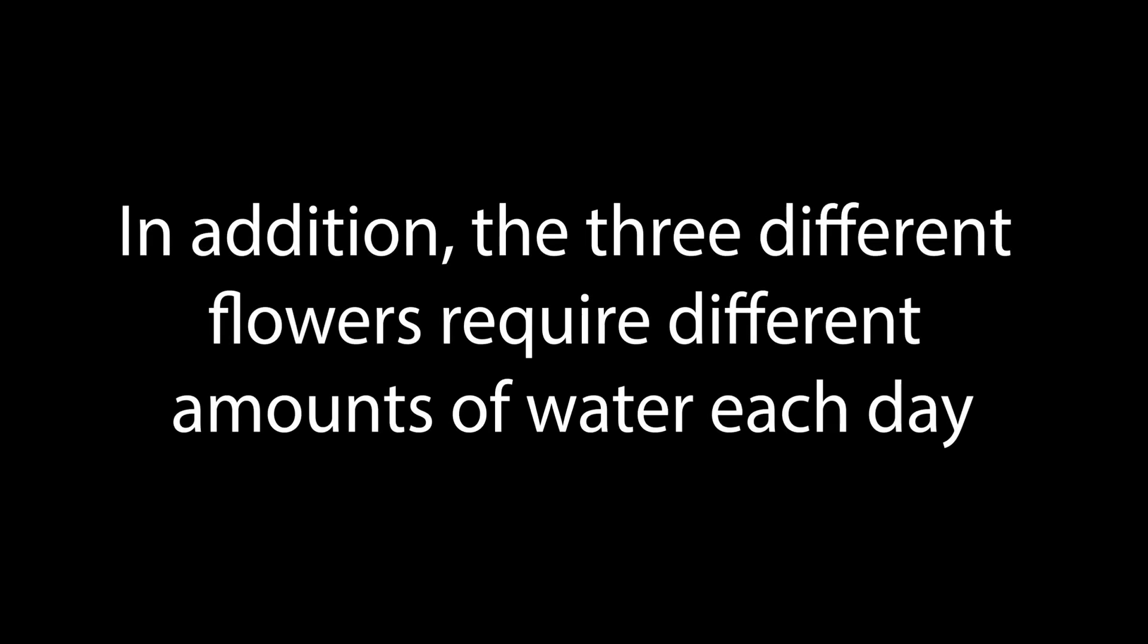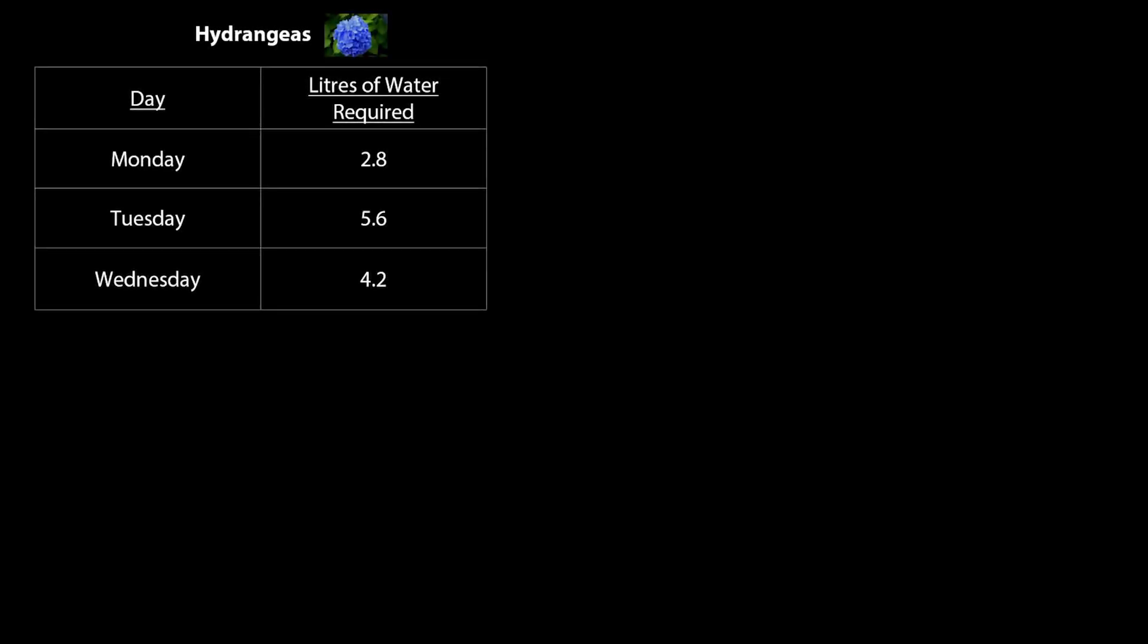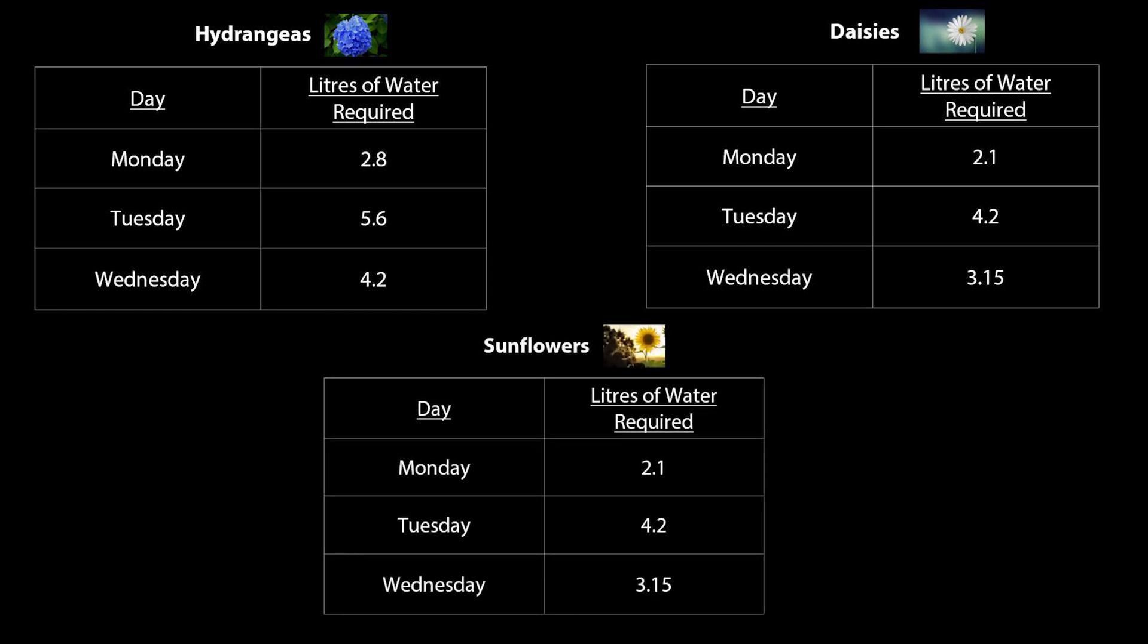In addition, the three different flowers require different amounts of water each day. The hydrangeas require 2.8 litres on a Monday, 5.6 litres on a Tuesday, and 4.2 litres on a Wednesday. The daisies require 2.1 litres on a Monday, 4.2 litres on a Tuesday, and 3.15 litres on a Wednesday. And finally, the sunflowers require 2.1 litres on a Monday, 4.2 litres on a Tuesday, and 3.15 litres on a Wednesday.